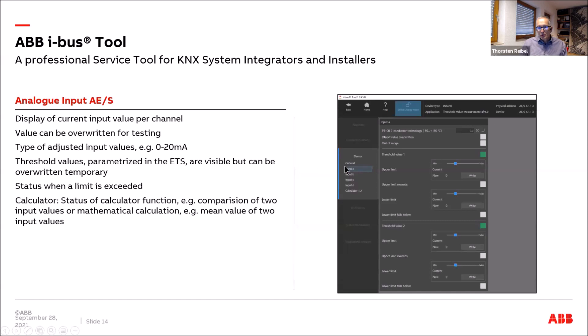For the analog input — a four-channel device with pages for inputs A through D — you can see the input value, change threshold values, and overwrite the actual input value for test purposes. If you overshoot the threshold, you can observe the real action behind it. Additional pages cover status information and internal calculations such as comparison of two input values or mean value computation.